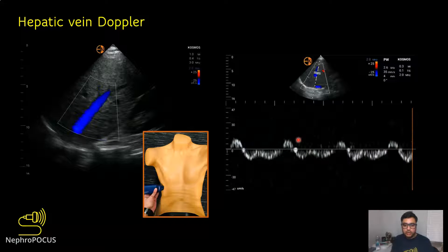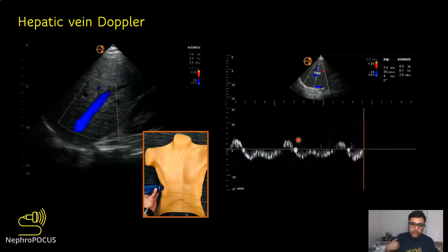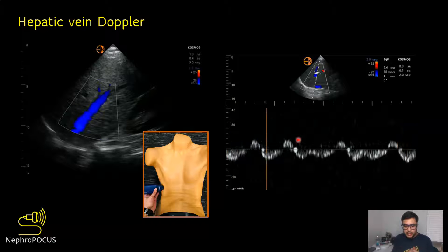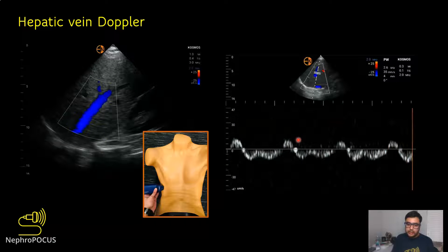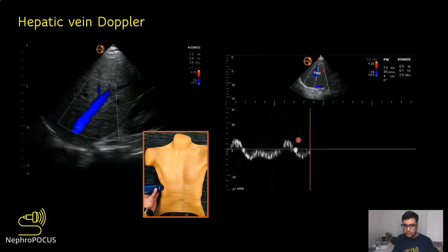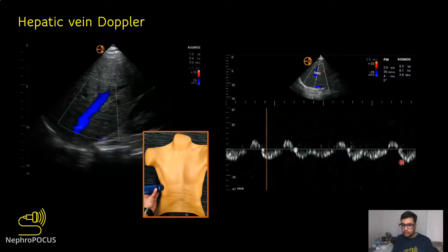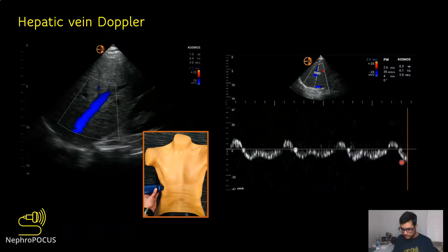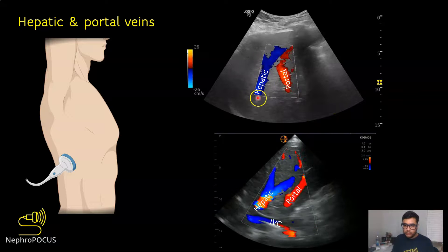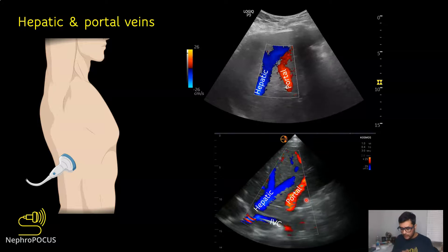Let's briefly talk about the individual components of VEXUS. The first is the hepatic vein. To find it, go to the lateral aspect, place the probe in the mid-axillary line with the probe marker pointing towards the sternal notch, and look slightly posteriorly. In most cases you will find a straight segment of the hepatic vein, and most of the time it appears blue in color because blood flow is away from the probe — towards the heart. In some patients with good windows, you can find the inferior vena cava, hepatic vein, and portal vein all in the same image.